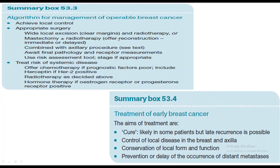The algorithm for management of operable breast cancer includes: achieve local control — appropriate surgery such as wide local excision with clear margins and radiotherapy, or mastectomy with radiotherapy. Offer reconstruction, immediate or delayed. Combined with axillary procedure. Await final pathology and receptor measurement before committing to treatment. Use risk assessment tools and stage if appropriate. Then treat the systemic disease — offer chemotherapy if prognostic factors are poor, include Herceptin if HER2 positive, and radiotherapy as decided.